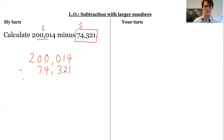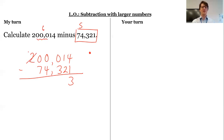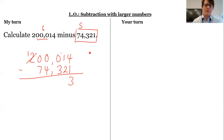There are no hundred thousands in the second number. 4 subtract 1 is 3 — that's easy. But 1 subtract 2 I can't do, and I need to regroup, but I've got no hundreds, no thousands, no ten-thousands. So I've got to go all the way to the hundred thousands. What I can't do is just take it all the way back over here, because that would be ten thousand hundreds, which doesn't work. So I've got to do this little shuffle.